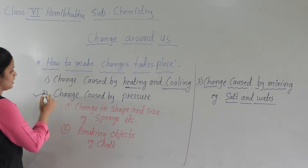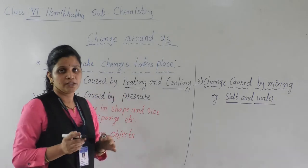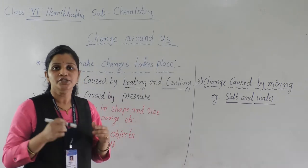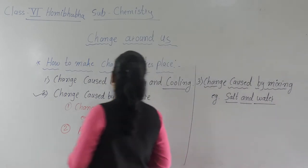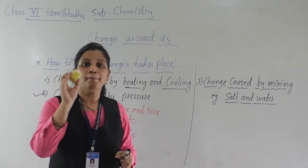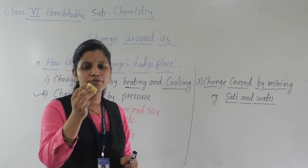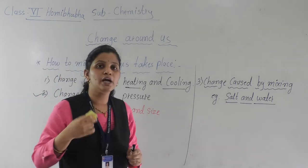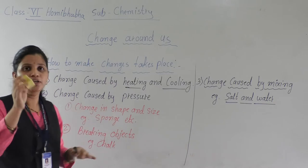The second point is change caused by pressure. If you apply pressure on any object, it will change. For example, this one is a sponge. Now I am applying pressure on it — see, the shape is changed. And if you release it, it will come back to its original position. Whenever you apply pressure on some objects, it may change the shape of the object.